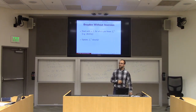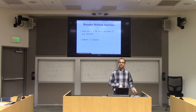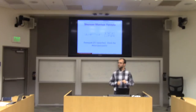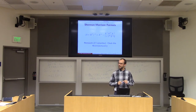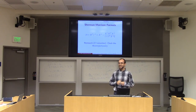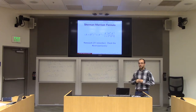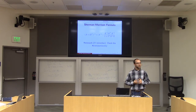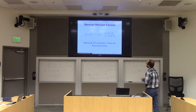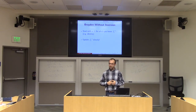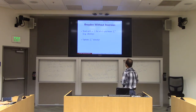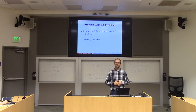Rather than updating J, I'm going to update J inverse using the Sherman-Morrison formula. I started with a matrix I knew how to invert, and then I didn't change it much going to the next step. I can update the inverse of the matrix just as easily as the matrix itself. This means you don't have to invert anything while running Broyden's method, as long as you start with an invertible J0 whose inverse you know — then just update the inverse of J rather than J itself.